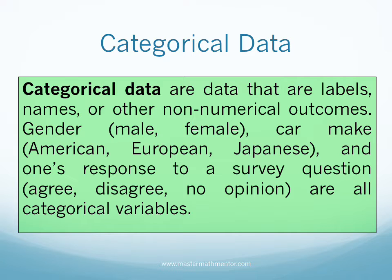Categorical data are data that are labels, names, or other non-numerical outcomes. Gender (male, female), car make (American, European, Japanese), and one's response to a survey question (agree, disagree, no opinion) are all categorical variables. This slideshow teaches you how to examine relationships within categorical data.